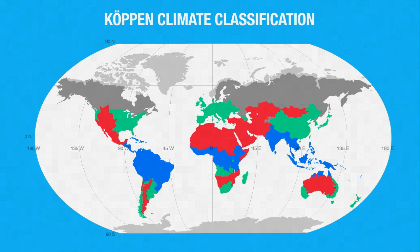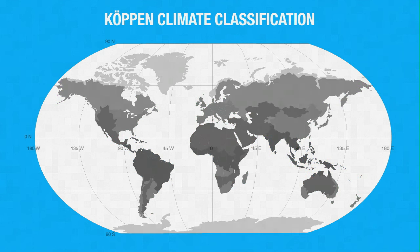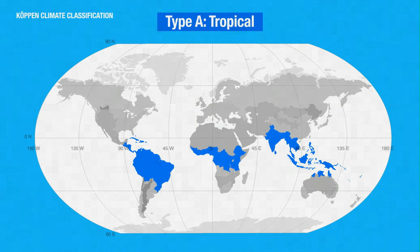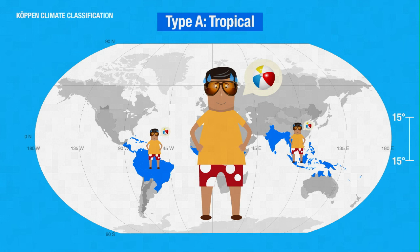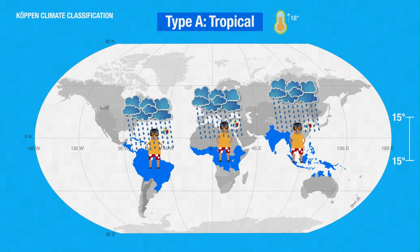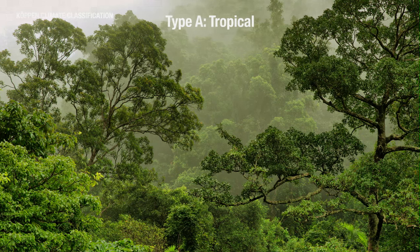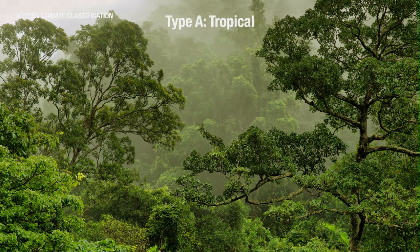According to this system, the world's climates are divided into four main types. Type A climates are tropical. Tropical climates are mostly located in a ring around the middle of the globe, between latitudes 15 degrees north and 15 degrees south. They are known for being warm all year round, with average temperatures never falling below 18 degrees Celsius. Many locations with such climates are tropical rainforests, which receive high amounts of precipitation. Examples of places with type A climate are the tropical rainforests of Central and South America.